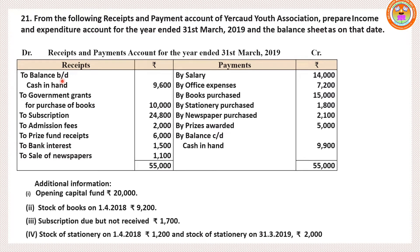While preparing income and expenditure account, we have to follow some norms. No opening balance and closing balance will appear. Only revenue transactions will be recorded — that means receipts and expenditures which are recurring in nature. Transactions which are non-recurring in nature are called capital transactions. Capital transactions never appear under income and expenditure account. Only current year subscription will be recorded; previous year and next year subscription will not be recorded. Non-cash items such as depreciation, outstanding, and prepaid expenses will be shown in income and expenditure account.